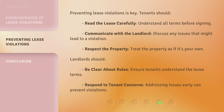Preventing lease violations is key. Tenants should read the lease carefully and understand all terms before signing, communicate with the landlord and discuss any issues that might lead to a violation, and respect the property — treat it as if it's your own. Landlords should be clear about rules, ensure tenants understand the lease terms, and respond to tenant concerns, as addressing issues early can prevent violations.